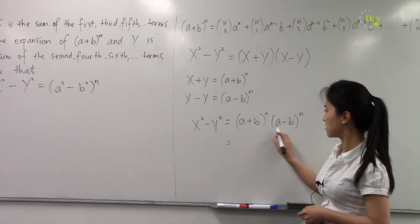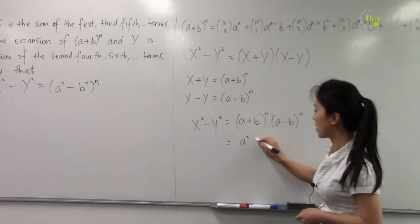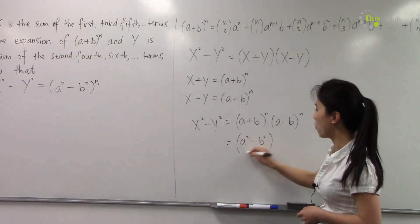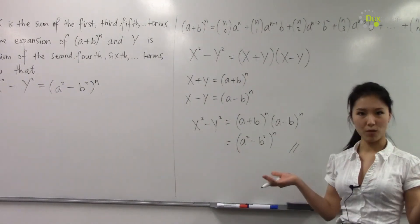We can combine this—that's the difference of two squares, giving us (a² - b²)^n. That's the end of our proof.